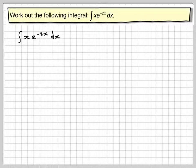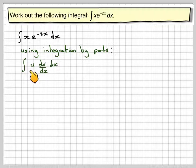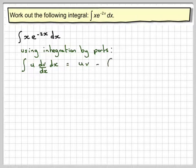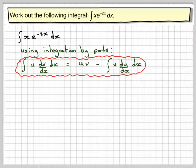When we've got a product, this is done by using integration by parts. There's a formula for that: the integral of u dv by dx dx equals uv minus the integral of v du by dx dx.